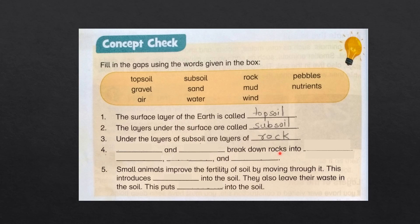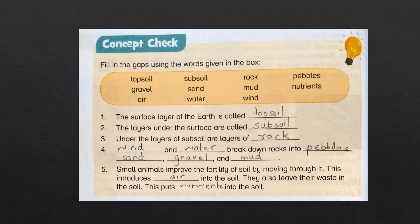Dash and dash break down rocks into dash, dash, dash, and dash. Wind and water break down rocks into pebbles, sand, gravel, and mud. Small animals improve the fertility of soil by moving through it — this introduces air into the soil. They also leave their waste in the soil — and this puts nutrients into the soil.